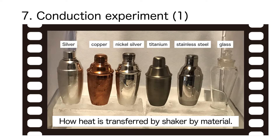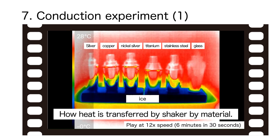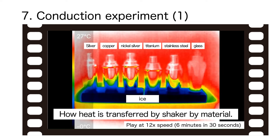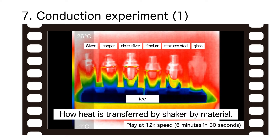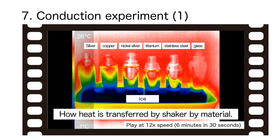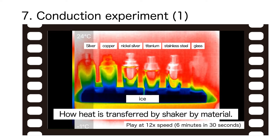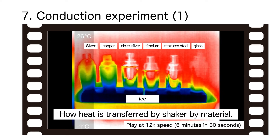Let us confirm the difference in heat transfer by thermal conductivity with an experiment. Shakers of different materials are placed side by side on ice, and the temperature change is photographed by thermography. In the thermography image, areas with high temperature are displayed in red and areas with low temperature in blue. The change from red to blue proceeds quickly for silver and copper shakers, which have high thermal conductivity, followed by nickel silver, titanium, and stainless steel. There is almost no color change for glass shakers with low thermal conductivity.